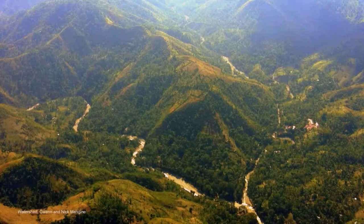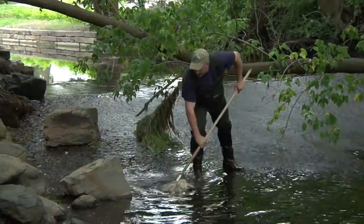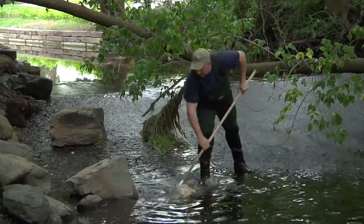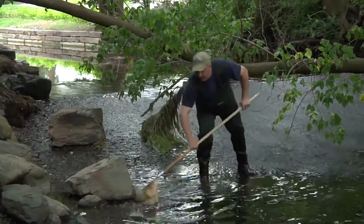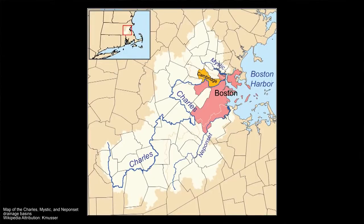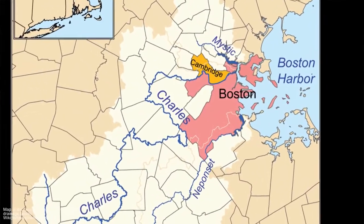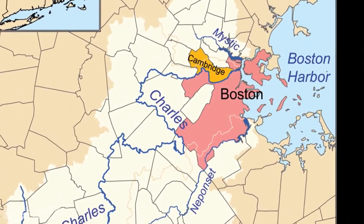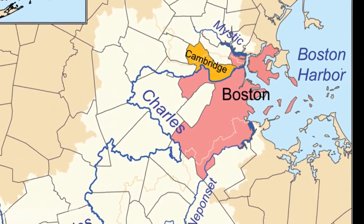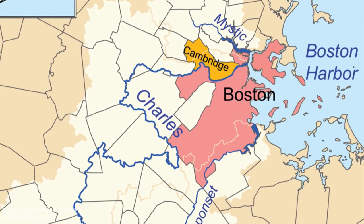Watersheds are areas across the land in which water flows and goes into a receiving water body. These watersheds can be close in proximity to coastal areas or the open oceans, in which case they are considered coastal watersheds.